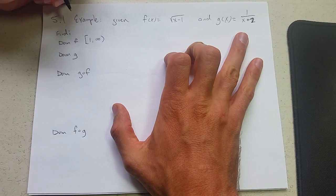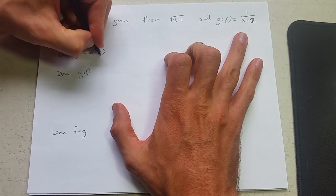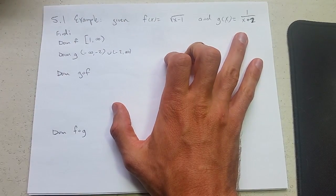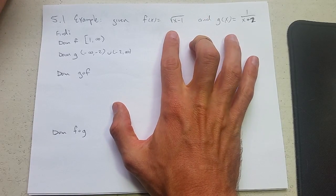Domain g just do not use negative 2. So it's negative infinity, negative 2, union, negative 2, infinity. So separately the domains are pretty easy to compute and understand for f and g.